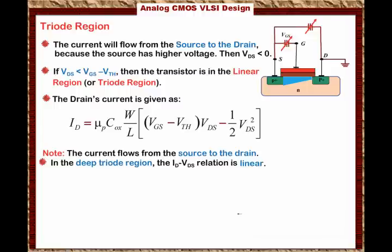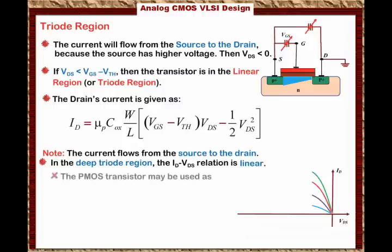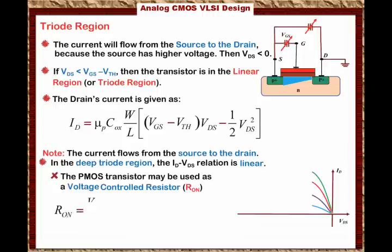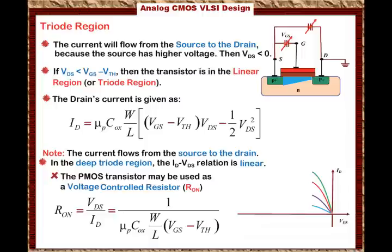If we plot ID versus VDS, we get a similar effect as with the NMOS transistor, except that current conducts for negative values of VDS. The PMOS transistor may also be used as a voltage-controlled resistor, called RON. Whether NMOS or PMOS, in the deep triode region they can act as voltage-controlled resistors, where RON = VDS/ID = 1 / [μP·COX·(W/L)·|VGS − Vth|].